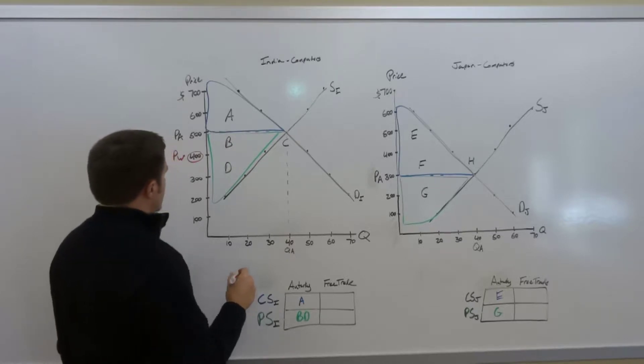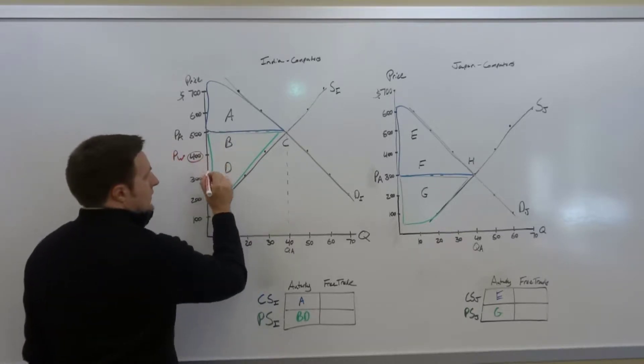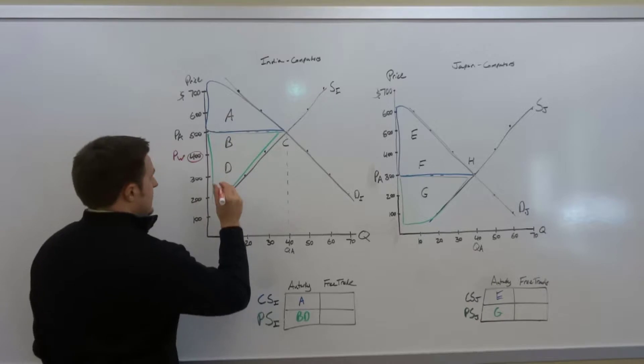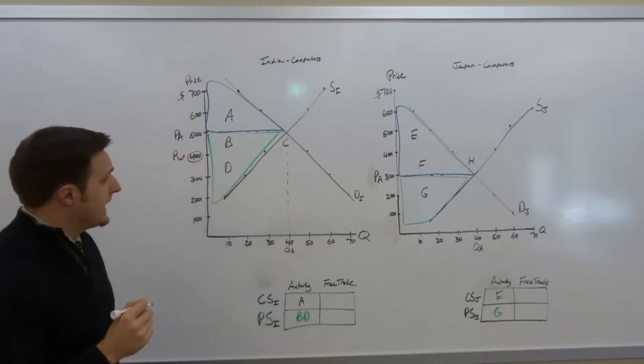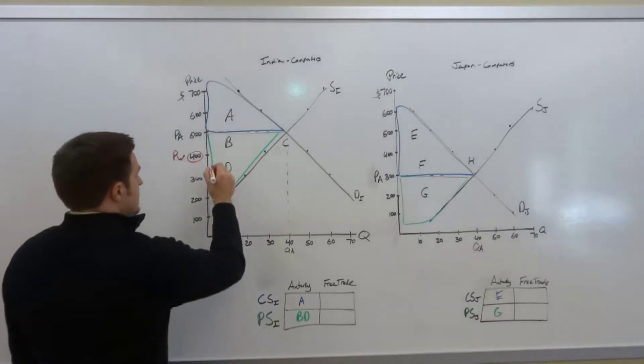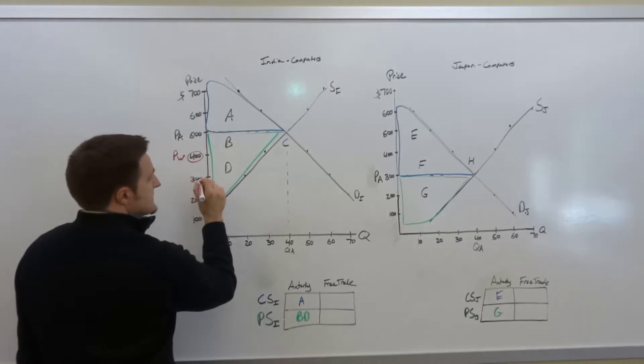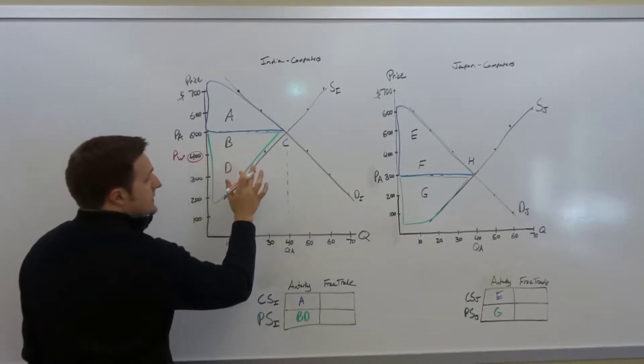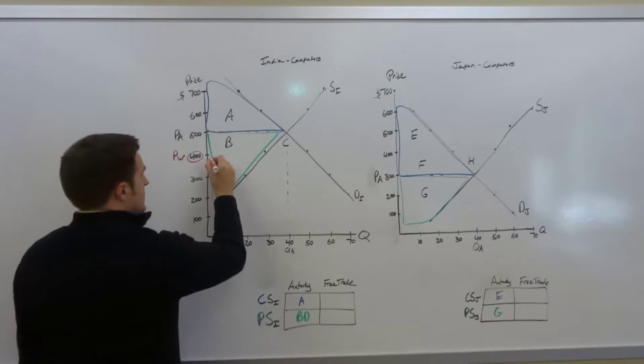Well, where is that $400 world price intersect with all of these supply and demand curves? What I'm going to do now is connect these graphs and show you how the world price is going to hit the Indian and Japanese supply and demand curves.